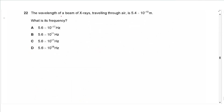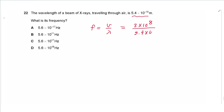Question 22: The wavelength of a beam of X-rays traveling through air is 5.4 × 10⁻¹⁰ m. Frequency equals speed divided by wavelength. The speed of electromagnetic waves in air is 3 × 10⁸ m/s. So frequency = 3 × 10⁸ ÷ 5.4 × 10⁻¹⁰ ≈ 5.6 × 10¹⁷ Hz. The answer is C.